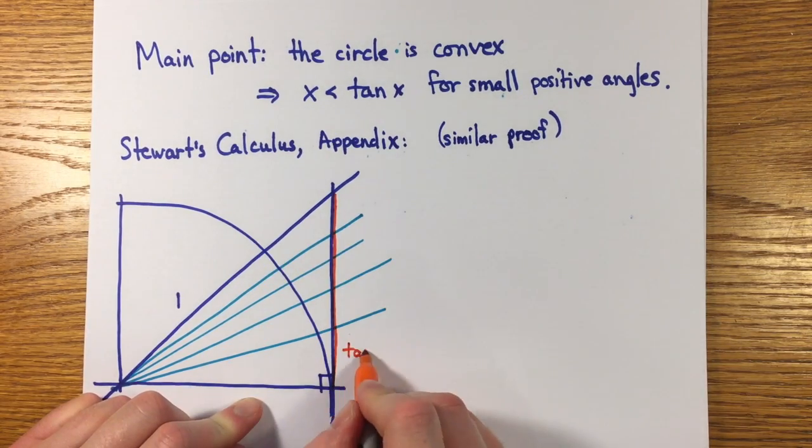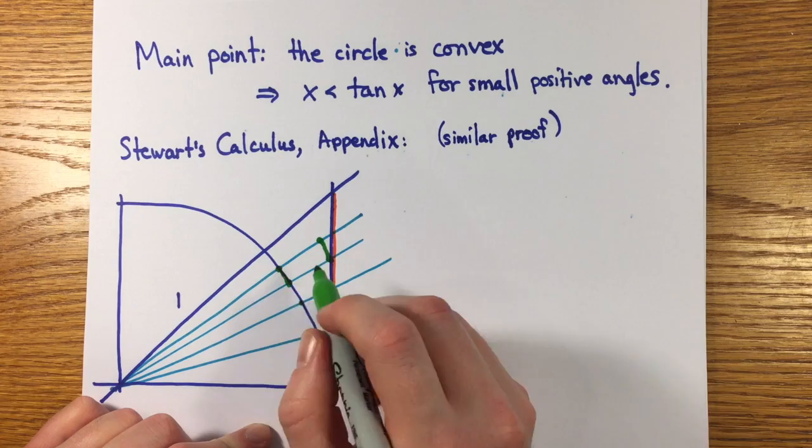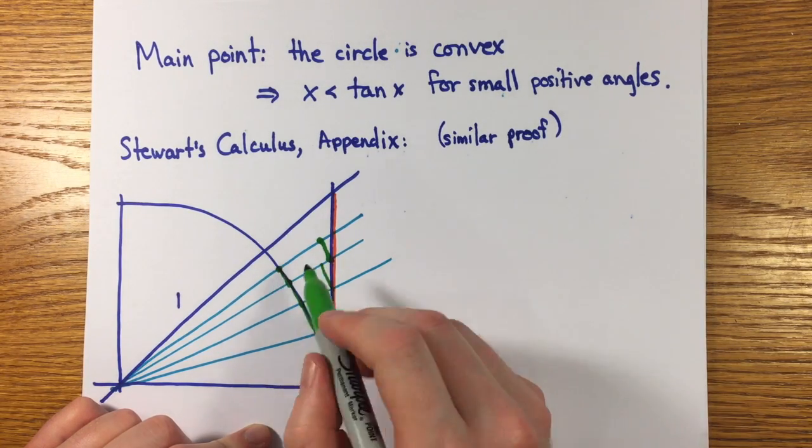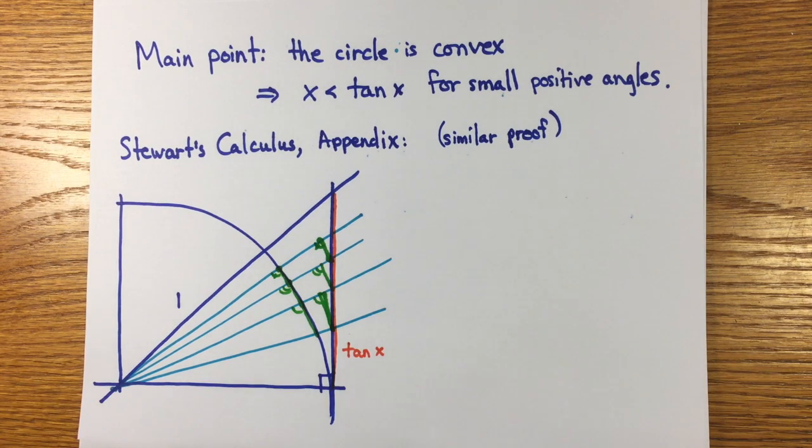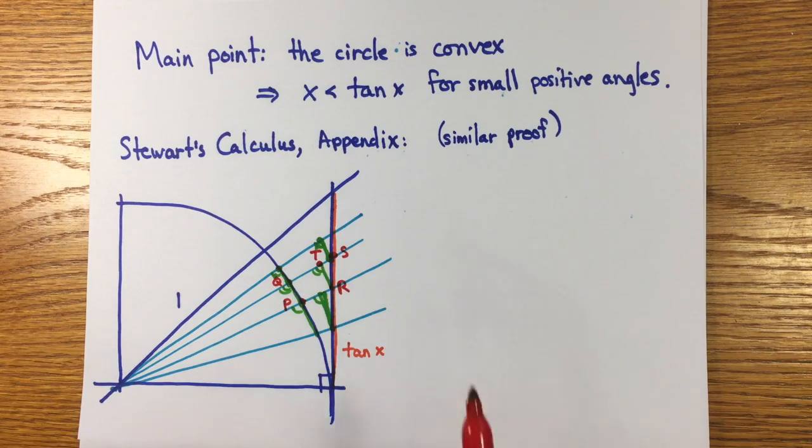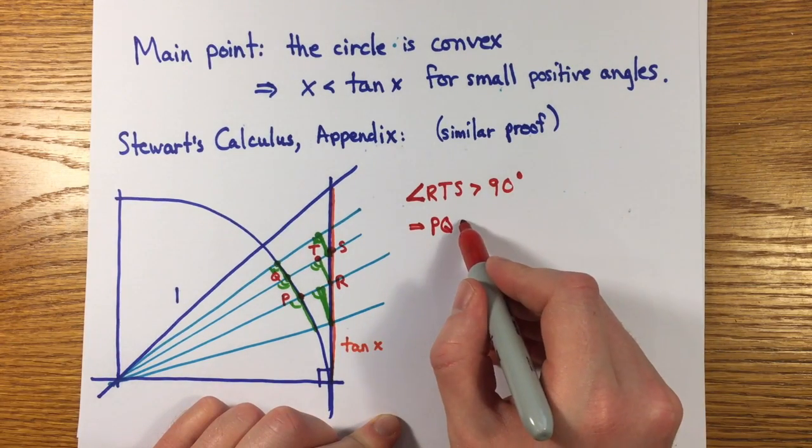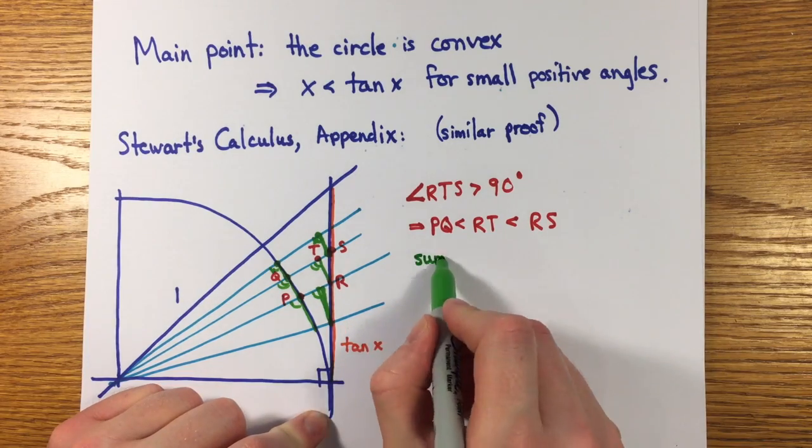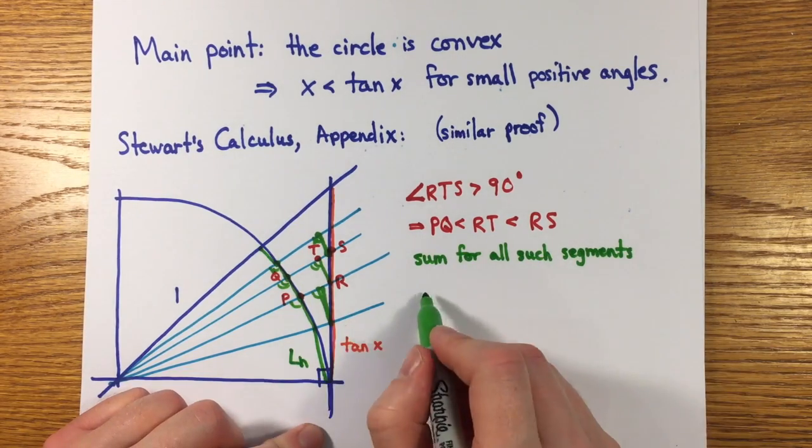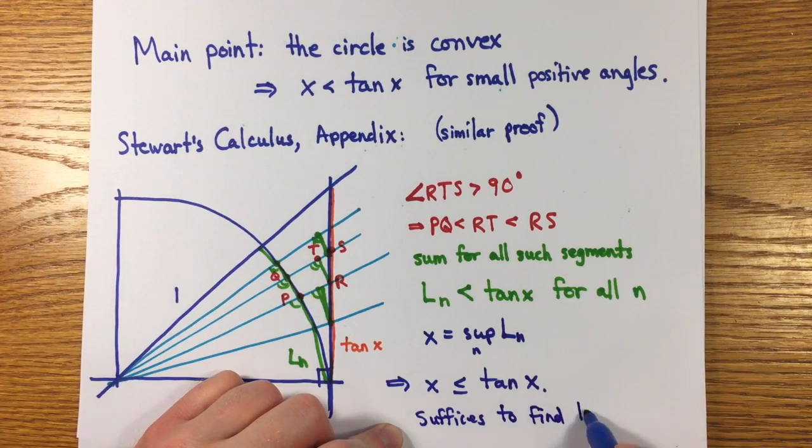His proof is essentially similar to the proof I've presented of Archimedes' axiom of convexity, just using a normal projection of the circle, which is a radial projection instead of the normal projection of segments. He divides the arc of length x into n pieces connecting with inscribed segments and projects radial lines out through these points to the vertical tangent. The convexity of the circle is what tells us that the angle OQP is acute, since OQ is normal to the circle at Q. Then angle RTS is greater than 90 degrees, and some elementary geometry gives PQ is less than RT is less than RS, the corresponding segment of the tangent of x. Summing all such segments together and taking the limit gives x is less than or equal to the tangent of x, which gives us what we need to calculate the limit sine x over x as x goes to zero.